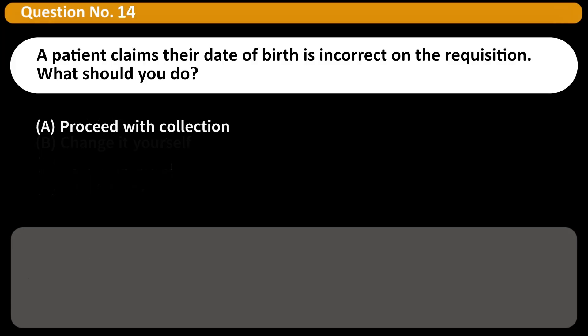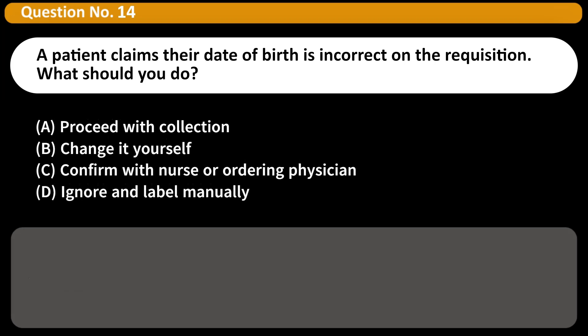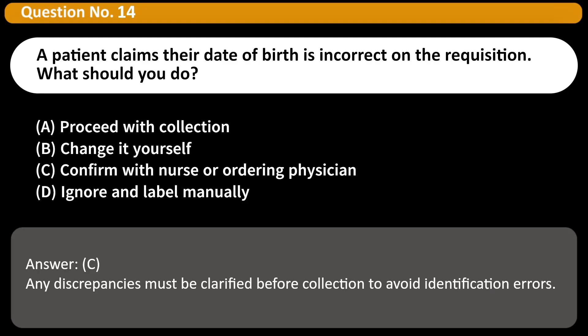A patient claims their date of birth is incorrect on the requisition. What should you do? A. Proceed with collection. B. Change it yourself. C. Confirm with nurse or ordering physician. D. Ignore and label manually. Answer: C. Any discrepancies must be clarified before collection to avoid identification errors.